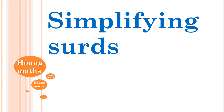Simplifying surds. Now when you talk about surds, you must talk about square numbers, because when you square root a square number, it gives you a nice whole number. So I just want to go through a few square numbers that you should know.